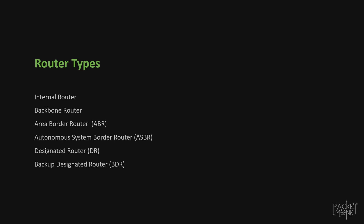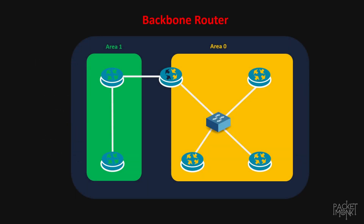The first router type is backbone routers. They are the routers which are present inside area zero. All other areas should connect to area zero, and that is why area zero is called the backbone area. So we call the routers inside area zero as backbone routers.